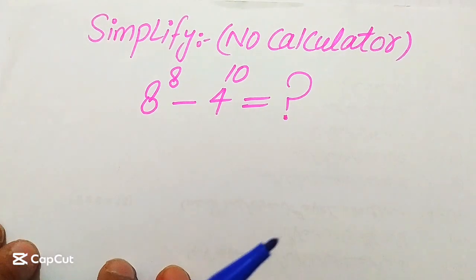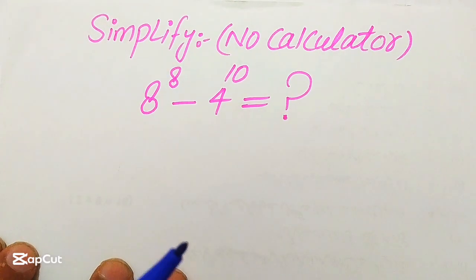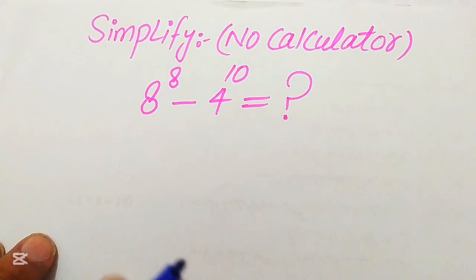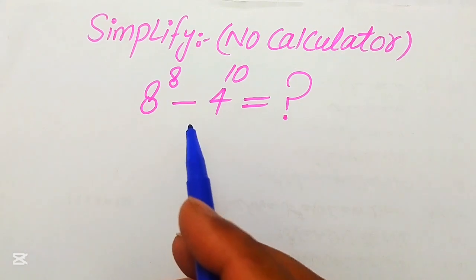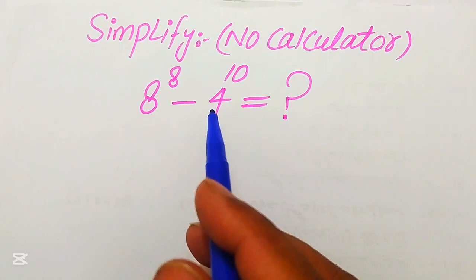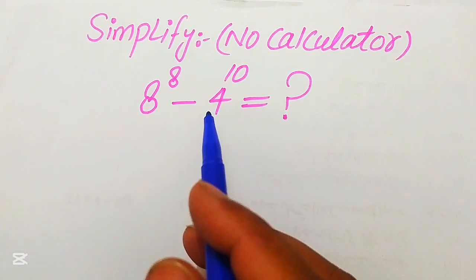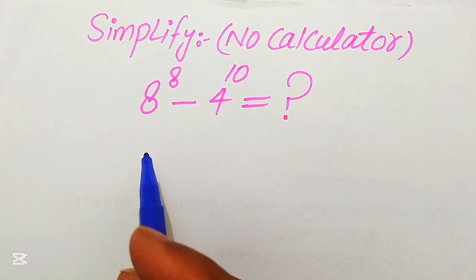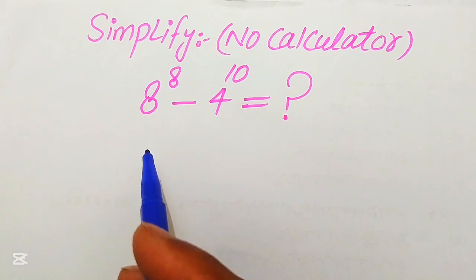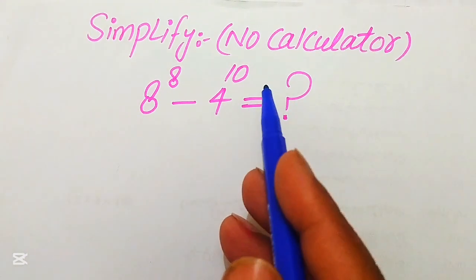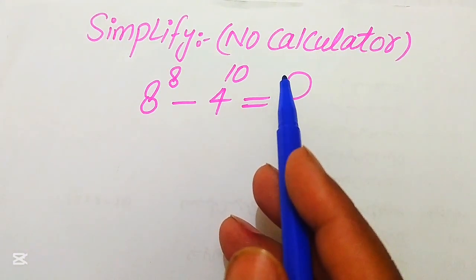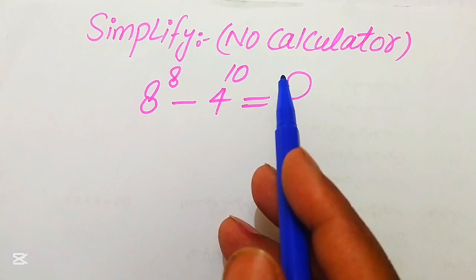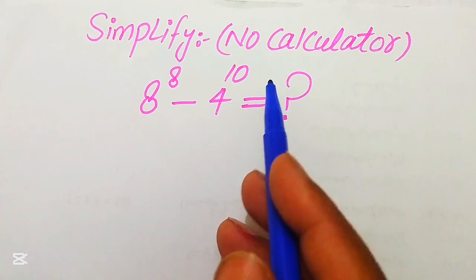Hello everyone. How to simplify this nice algebraic expression: we have 8 to the power of 8 minus 4 to the power of 10, and we write this expression in simplified form. Remember that a calculator is not allowed in this problem.